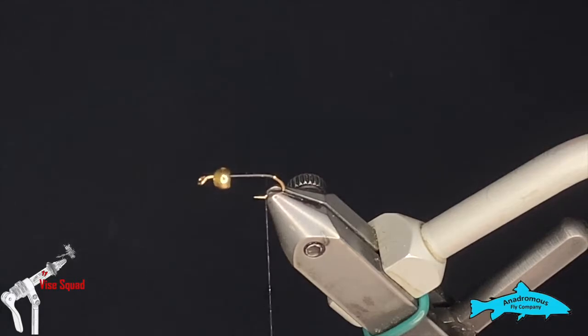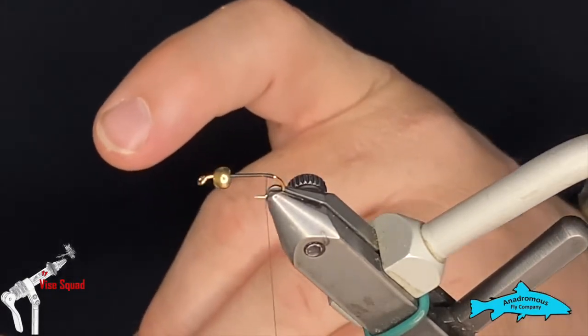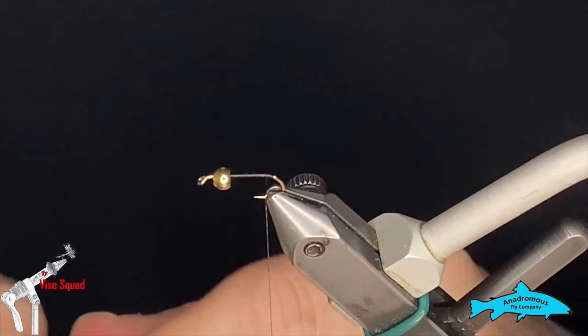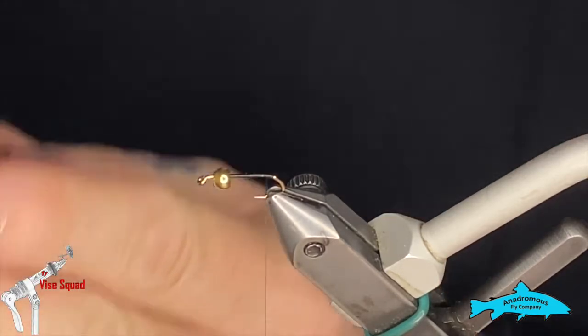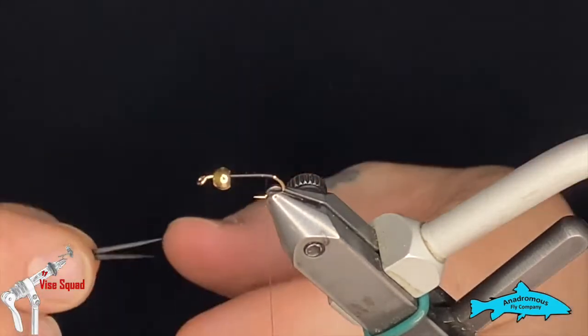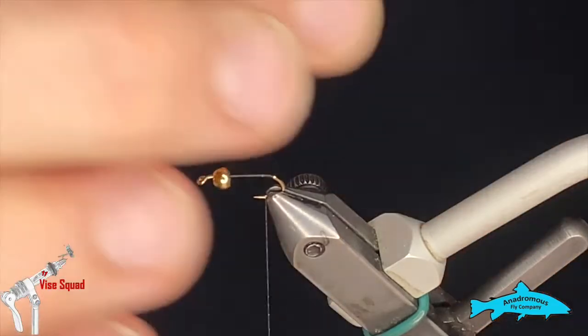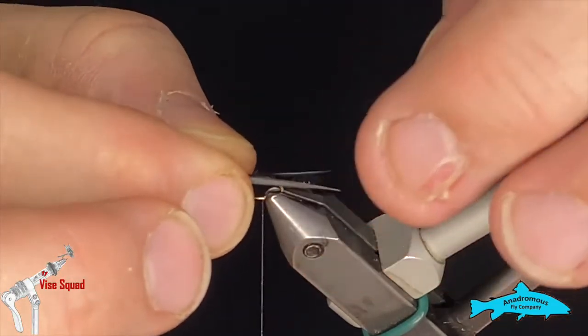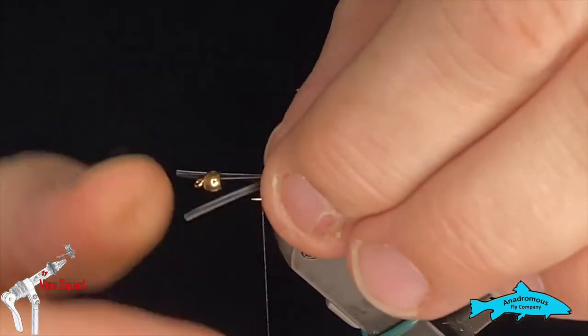I'll bring that thread back in front of the little ball of thread, and we're going to grab some black goose biots. We're going to turn them away from each other so that they flare out, keeping the tips nice and lined up like so. Lay those on there and try to make those legs not any longer than the body, maybe even a little bit shorter.